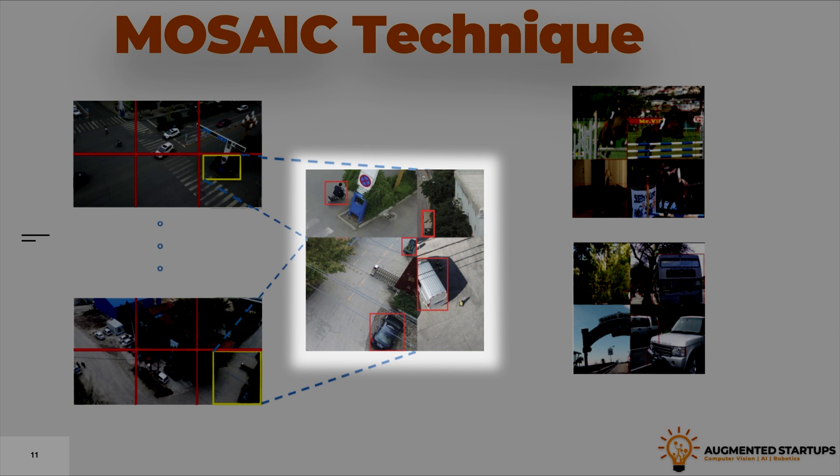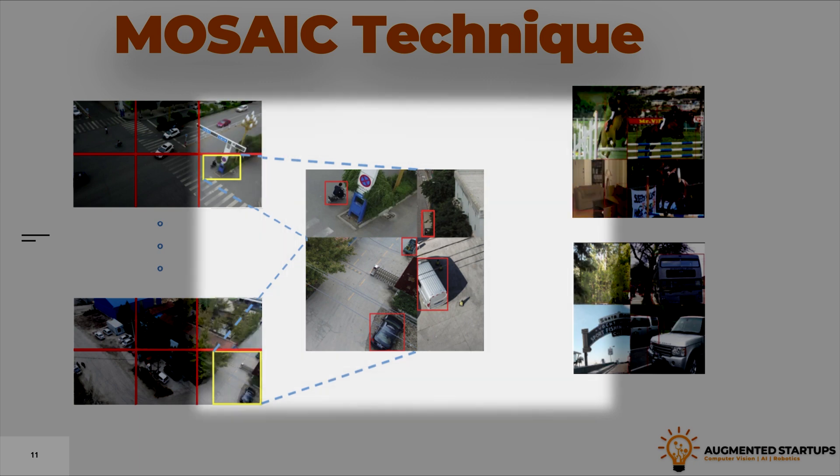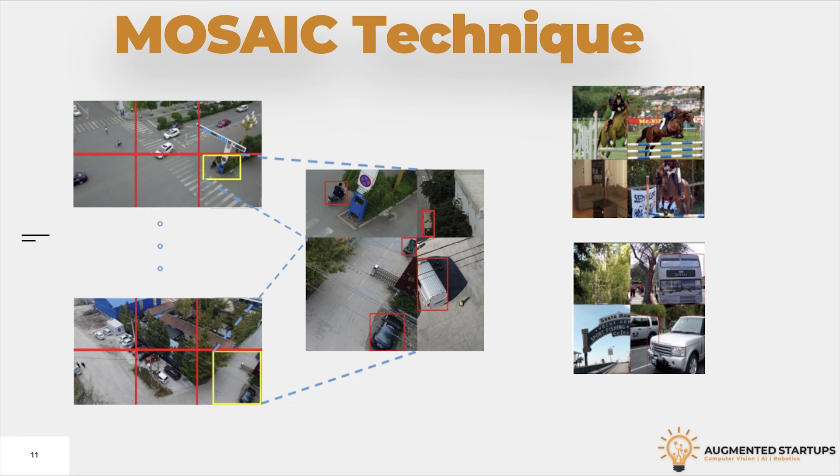This technique will help the model to detect small-scale objects and will help generalize the localization of objects and make it less dependent on the environment the object is in. Also, it helps the model to learn to generalize the object occlusions. That means when a part of an object is hidden or not present in an image. Consider if the wings of the airplane are not present or occluded with buildings or clouds, we still want our model to detect that airplane. This technique where we are taking random crops from four images and stitching them together helps our model to learn complex situations and patterns.